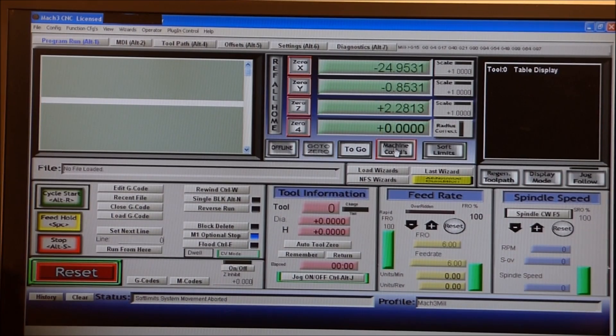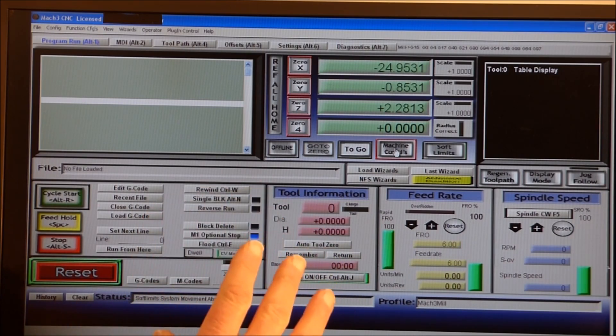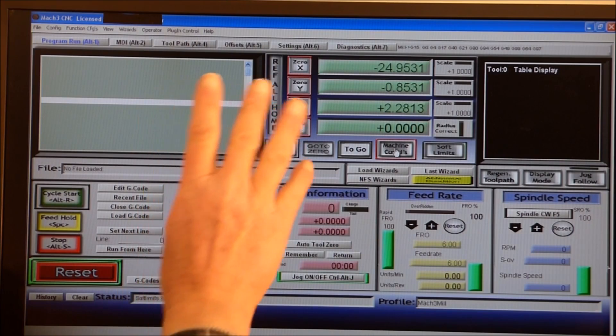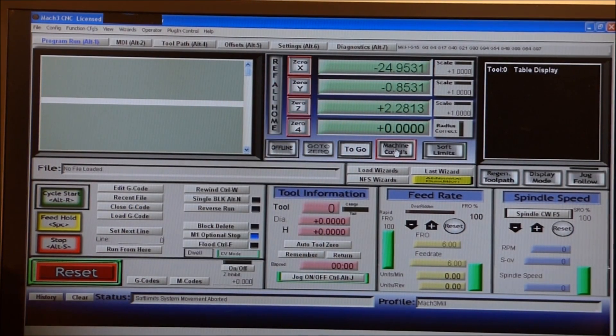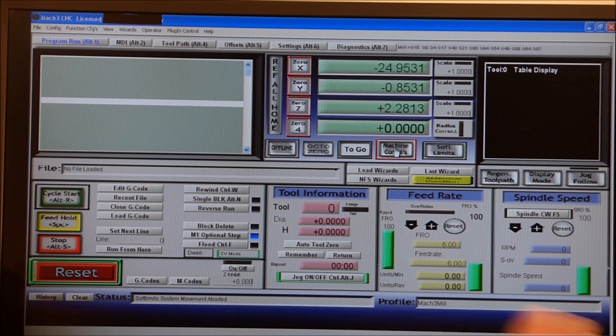Machine coordinates. This is where the confusion comes in - how do you make those zero? You can't press the ref all because Mach 3 will want to actually move the axes and find the limit switches. We don't have limit switches. The easiest way to do this is switch your machine off.